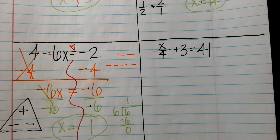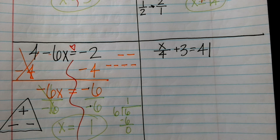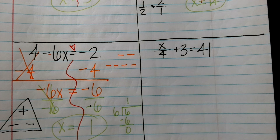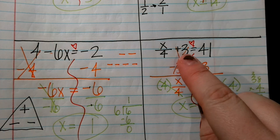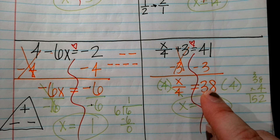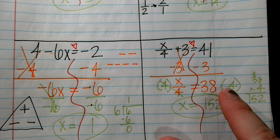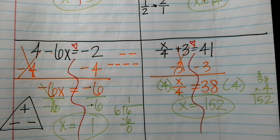Last problem: x over 4 plus 3 equals 41. I want you to pause the video, solve it yourself, and then play the video to check your answer. Hopefully you got x equals 152. We're left with x over 4 equals 38. Since x is being divided by 4, we multiply both sides by 4. So x equals 152.